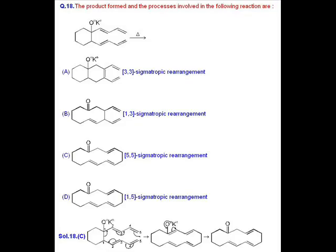It is a sigmatropic reaction. In option C, when we heat the compound given to us, then central sigma bond breaks up and after a 5,5 sigmatropic rearrangement reaction, you get the product given in option C.